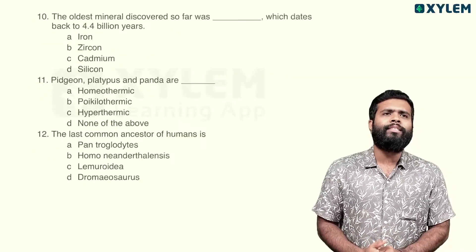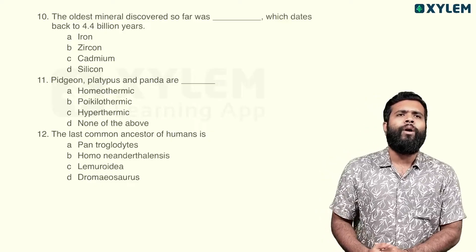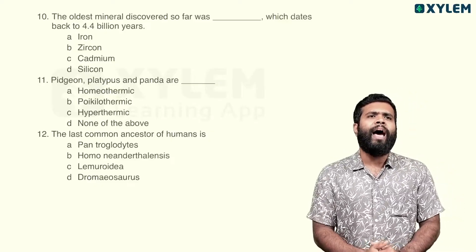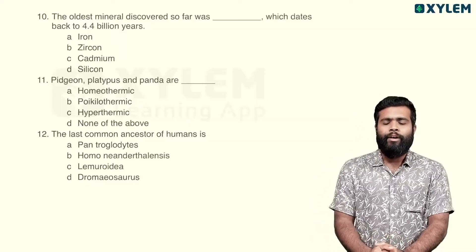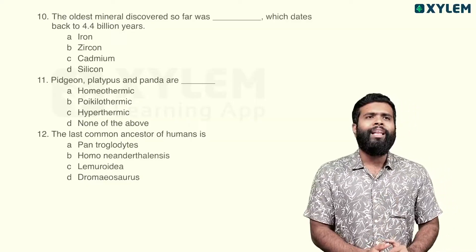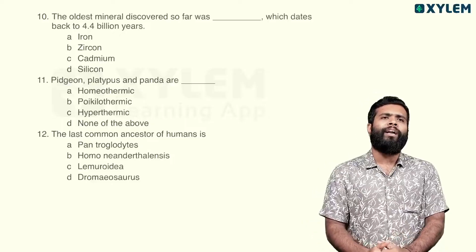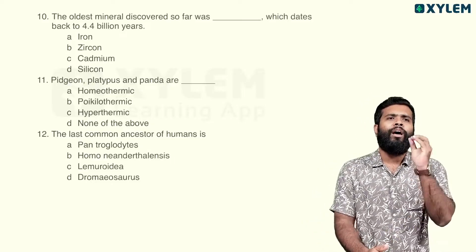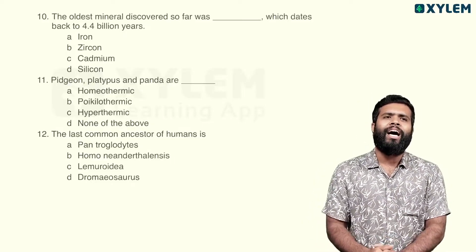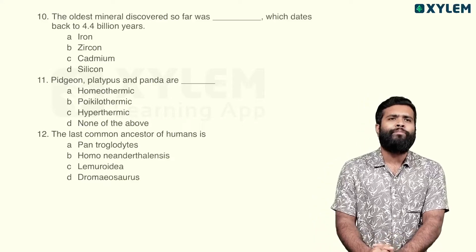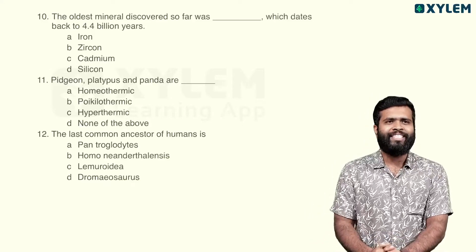The oldest mineral discovered so far was dash, which dates back to 4.4 billion years ago. That is option B — Zircon — the right answer.